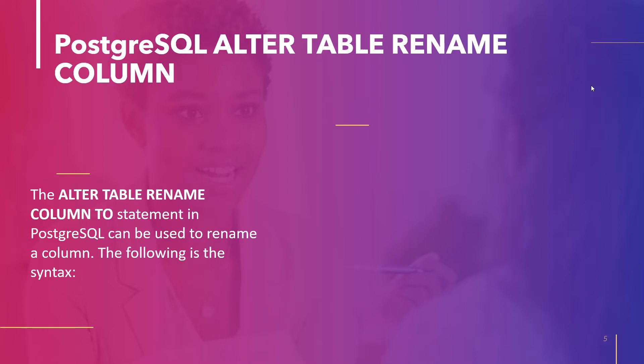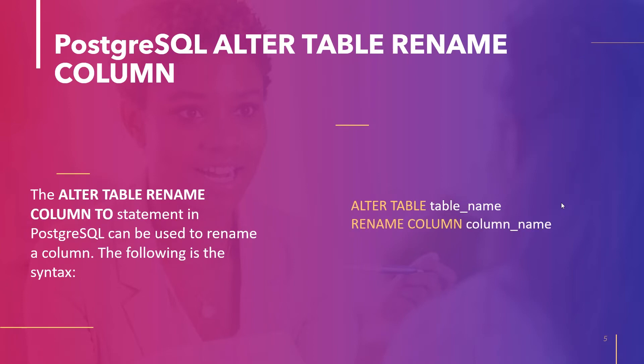The next topic is PostgreSQL ALTER TABLE Rename Column. To rename a column in PostgreSQL, we can use the ALTER TABLE RENAME COLUMN TO statement. The syntax is: ALTER TABLE, TableName, RENAME COLUMN keyword, then column name TO new column name.